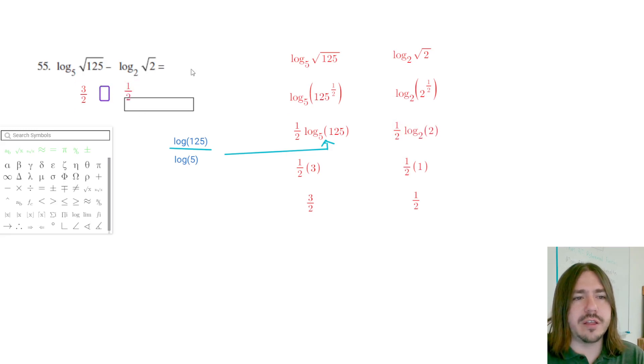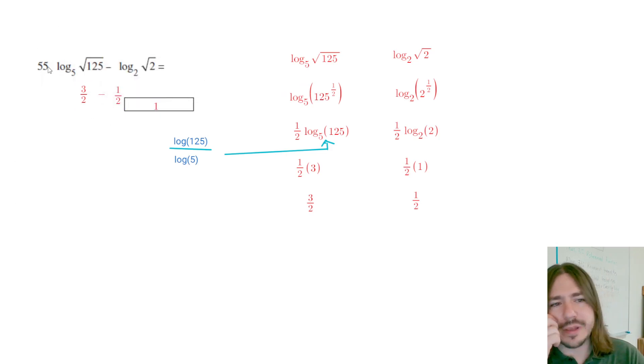And so yeah, we've got 3 halves minus 1 half would be 2 halves. And 2 halves equals 1. So this whole expression, this log base 5 of root 125 minus log base 2 of root 2 equals 1. And that's it for number 55.